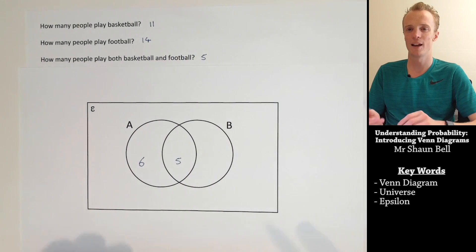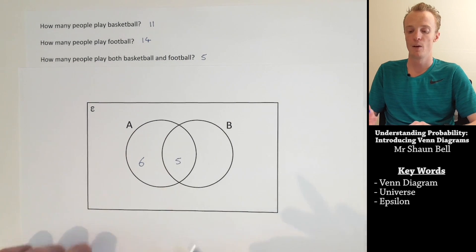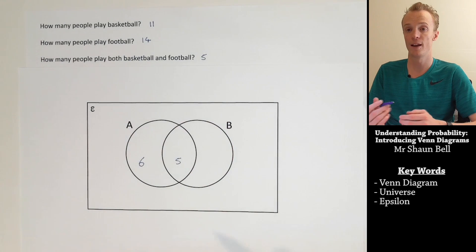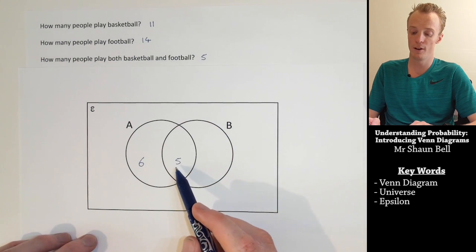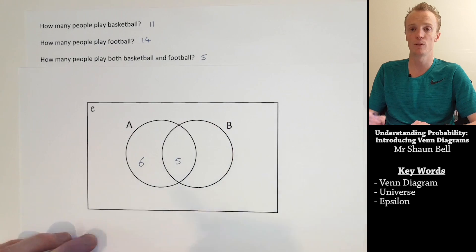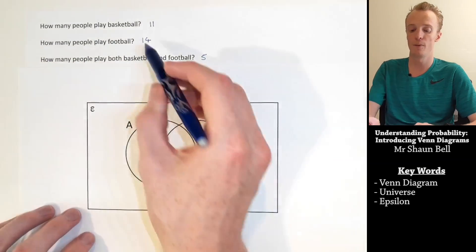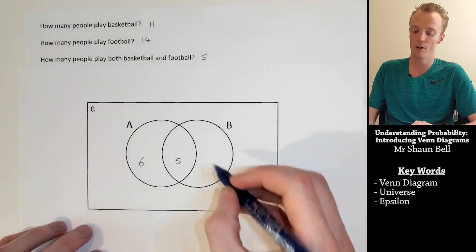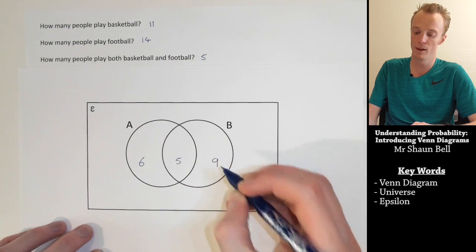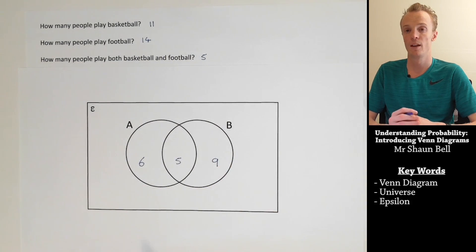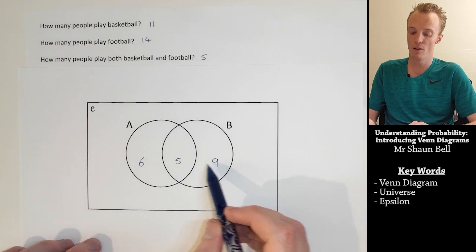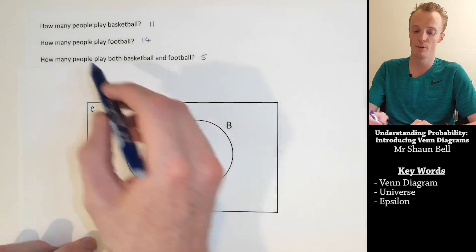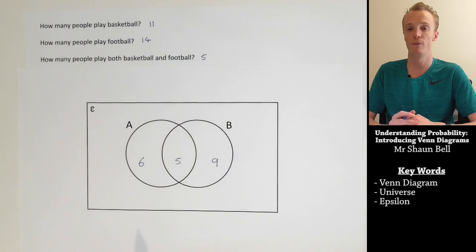Now let's look at the football circle. We know that in total there should be 14 people that play football. We've already recorded 5 of those because they also play basketball. So 14 minus 5 equals 9, meaning 9 more people play only football. To check: 9 plus 5 equals 14, which is the total number of people that play football.